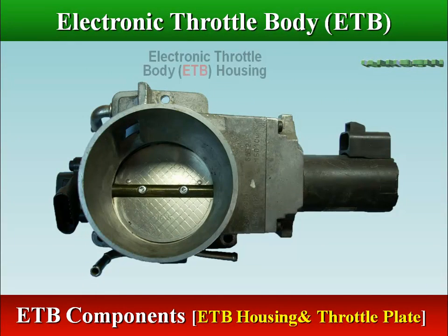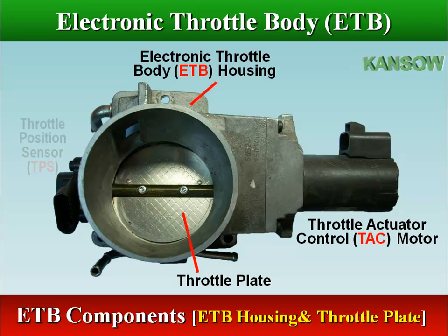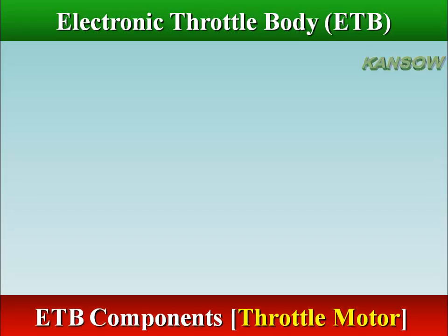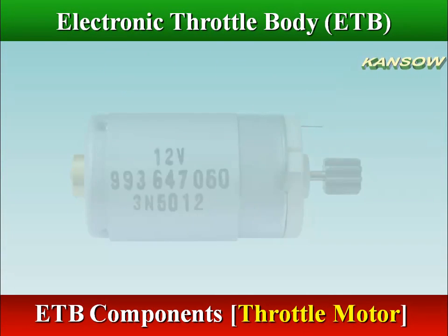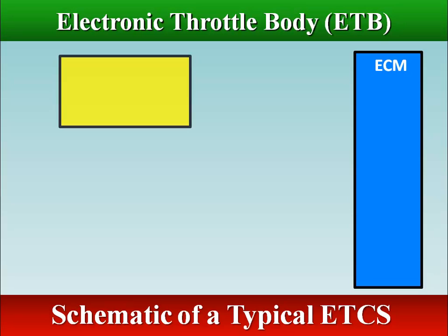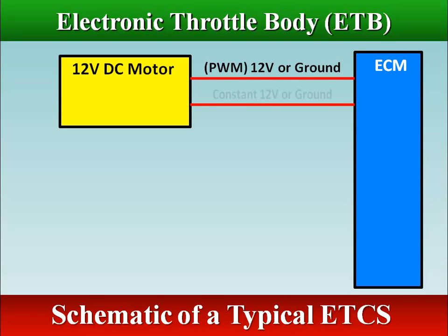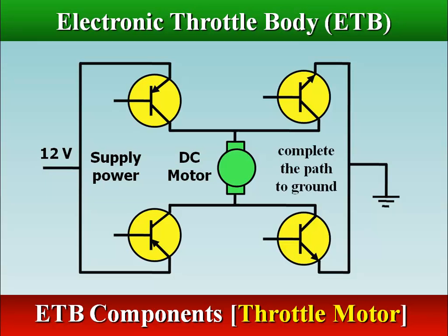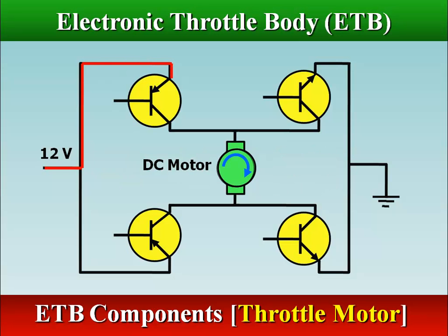The largest piece inside the throttle body is the throttle plate, which is a butterfly valve that regulates airflow. The throttle body actuator motor is a 12-volt DC electric motor. Both power and ground are switched to change the direction of the motor. The motor circuit consists of four control transistors on the opening and closing circuits; one transistor supplies power and the other completes the path to ground, allowing the ECM to control the direction of current through the motor. An H-bridge circuit is used to control the direction of the DC electric motor of the electronic throttle control unit.